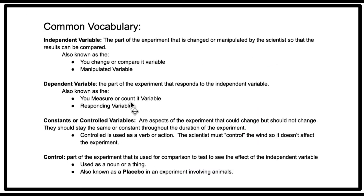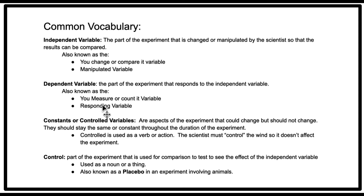The experimental groups are the plants receiving different fertilizers. Let's define some common vocabulary. The independent variable is the part of the experiment that is changed or manipulated by the scientists so that results can be compared. It's often called the 'you change it' or manipulated variable. The dependent variable is the part of the experiment that responds to the independent variable — often called the 'you measure it' or responding variable.